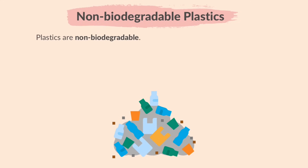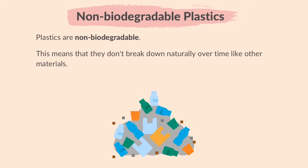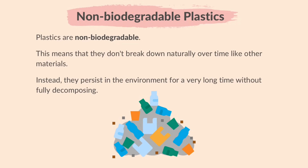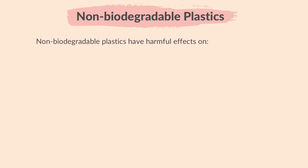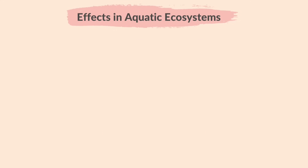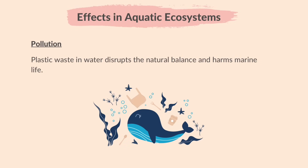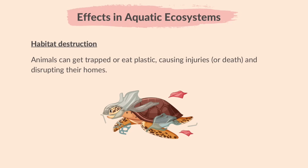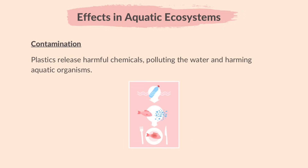Plastics are non-biodegradable, and non-biodegradable plastics have harmful effects on aquatic ecosystems and terrestrial or land ecosystems. In aquatic ecosystems: Pollution — plastic waste in water disrupts the natural balance and harms marine life. Habitat destruction — animals get trapped or eat plastic, causing injuries or death and disrupting their homes. Contamination — plastics release harmful chemicals, polluting the water and harming aquatic organisms.